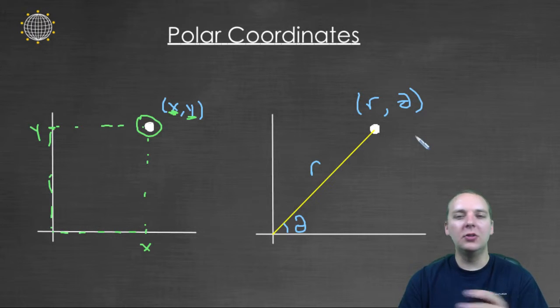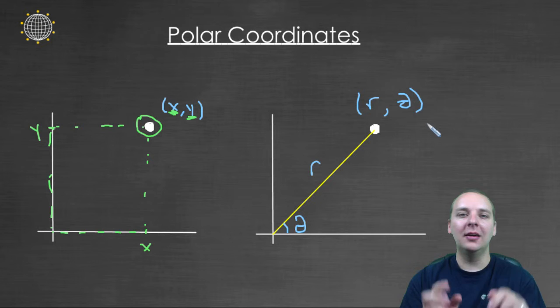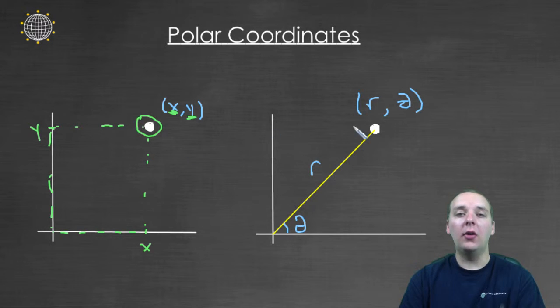So this is expressed as r, theta. Just to be clear, there's no connection between x specifically to r, and y specifically to theta, even though the notations look a little similar. These are all interrelated, as we'll talk about in a minute. But just because the x is listed first, and so is the r, there's no real immediate connection there though.